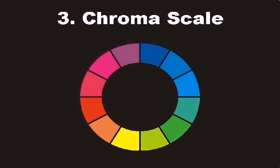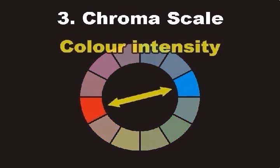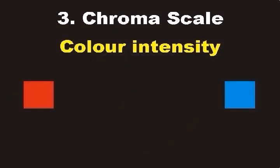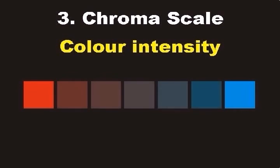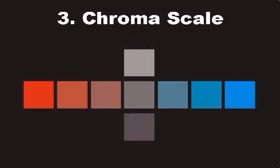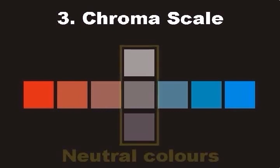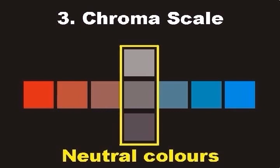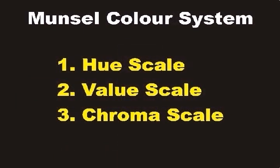The third color scale is called the chroma scale. We use the chroma scale to describe how pure or dull colors are — this is often referred to as color intensity. When we gradually mix together two opposite or complementary colors, we get a range of colors that vary in purity. When complementary colors are mixed about half and half, the resulting dull colors are different browns. These brown colors, together with their tints and shades, are often called neutral colors. The three color scales can be used together to describe any color. Together, these color scales are the basis of the Munsell color system.